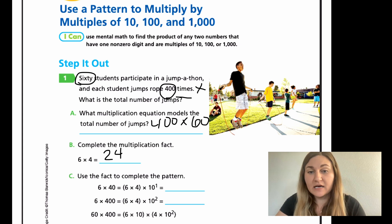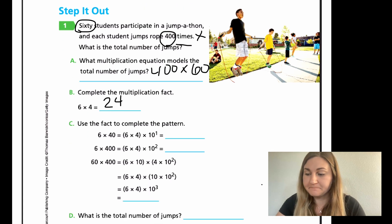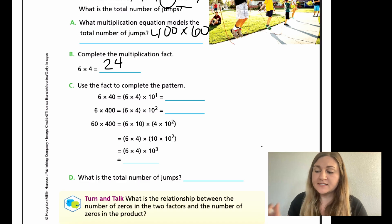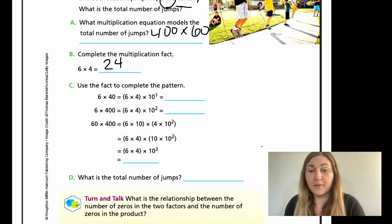Part C, this is the breakdown of how to understand what we're doing when multiplying by powers of 10. Use the fact to complete the pattern. 6 times 40, when broken apart, I'm taking my 6 and my 4 and separating from my power of 10. So 6 times 4 is 24, but times that power of 10, I'm just adding a 0, so that is 240.